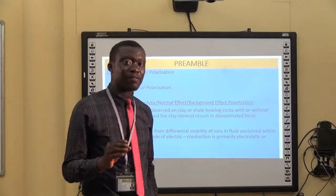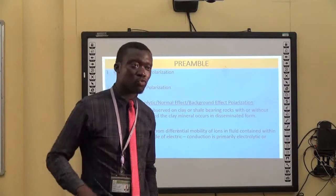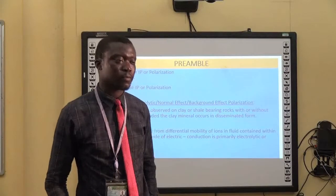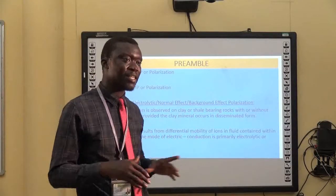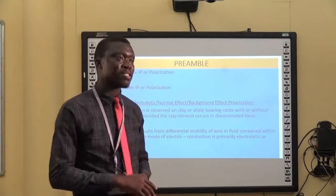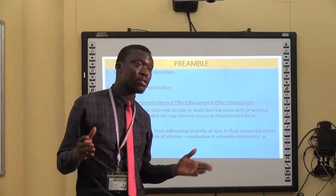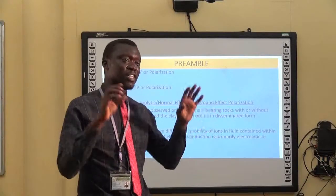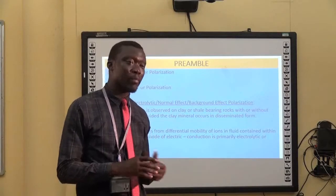These are observed in clay or shale-bearing rocks when they occur in disseminated form in certain proportions. When a rock has clay mineral disseminated in certain proportions, then such rock will manifest induced polarization. Also, when metallic ions are present with the clay mineral in the rock, we will still have membrane polarization.